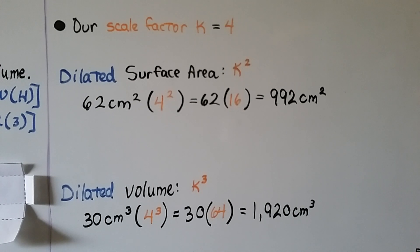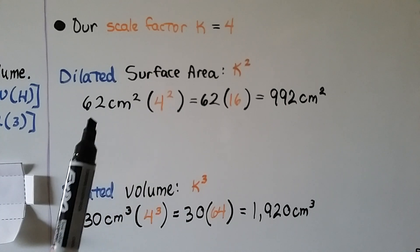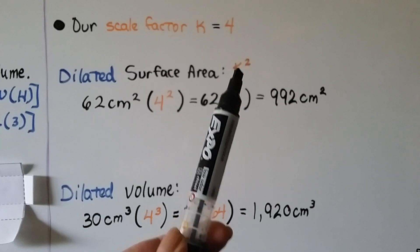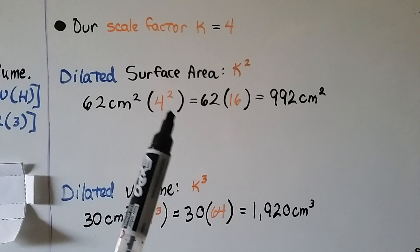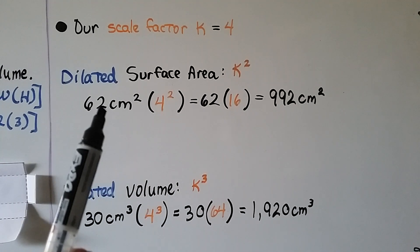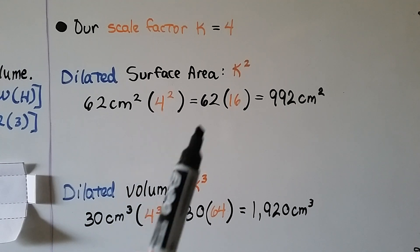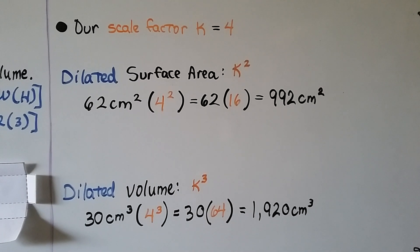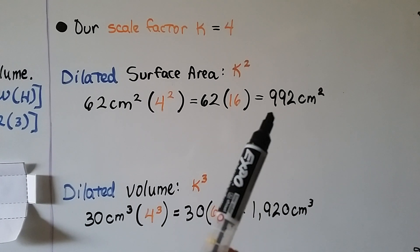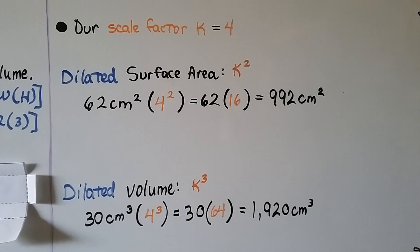Our scale factor k is 4, we dilated it by 4, and our dilated surface area is going to be k squared, and since that's a 4, it's going to be 4 squared. So we multiply 62 times 4 squared, which would be 62 times 16. We get a total surface area of 992 centimeters squared. For the dilated volume, we have to do k cubed, so that's 4 cubed. That's a 64. We do the 30 times 64, and get 1920 centimeters cubed.